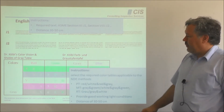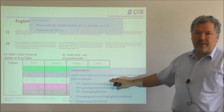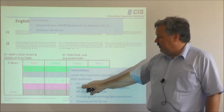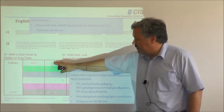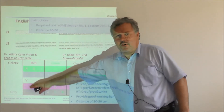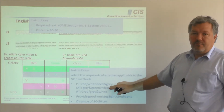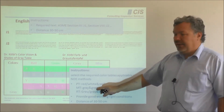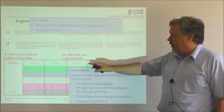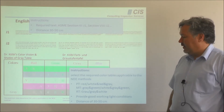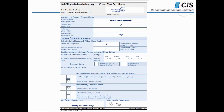With respect to the shades of grey and colour tables, select the required colours for your method of NDE. For PT, you need red, white, and grey — that is sufficient, so you only need that corner of the sheet. For fluorescent MT, green comes into play. For radiographic examination, you only need shades of grey, and the other colours are not necessary to be considered. Again, a distance of 30 to 50 cm should be followed.